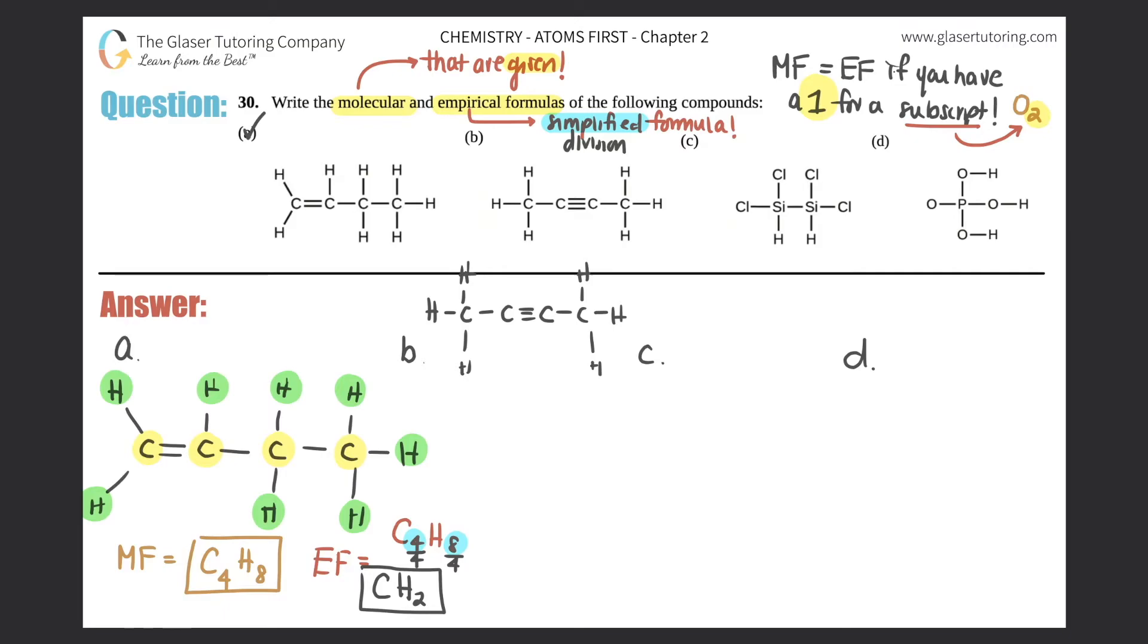So what do we got? How many carbons? One, two, three, four. So four again. So my molecular formula would start off with C4. And then how many H's? One, two, three, four, five, six. So this would be C4H6. That's your molecular formula. Box that off.